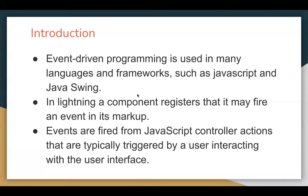This event-driven programming is available in Lightning components. If you implement a Lightning component with Aura, basically a component registers that it may fire an event in its markup. In Lightning component, we create a markup file where we need to register the event. Then events are fired from the JavaScript controller actions, which are typically triggered by a user interacting with the user interface. So if you click on a button, your controller method executes and that method will be responsible to fire the event. We register the event in the component file, and in the JavaScript controller, we fire the events.